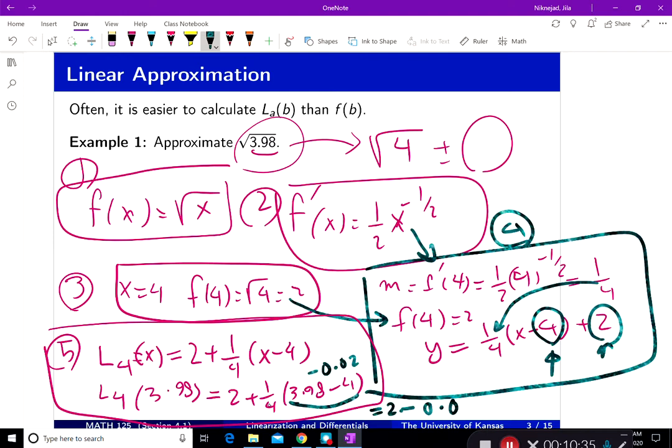And to simplify, 1 divided by 2 is 0.5. And then this entire thing is going to be 1.995. And so this is the approximation that we have.